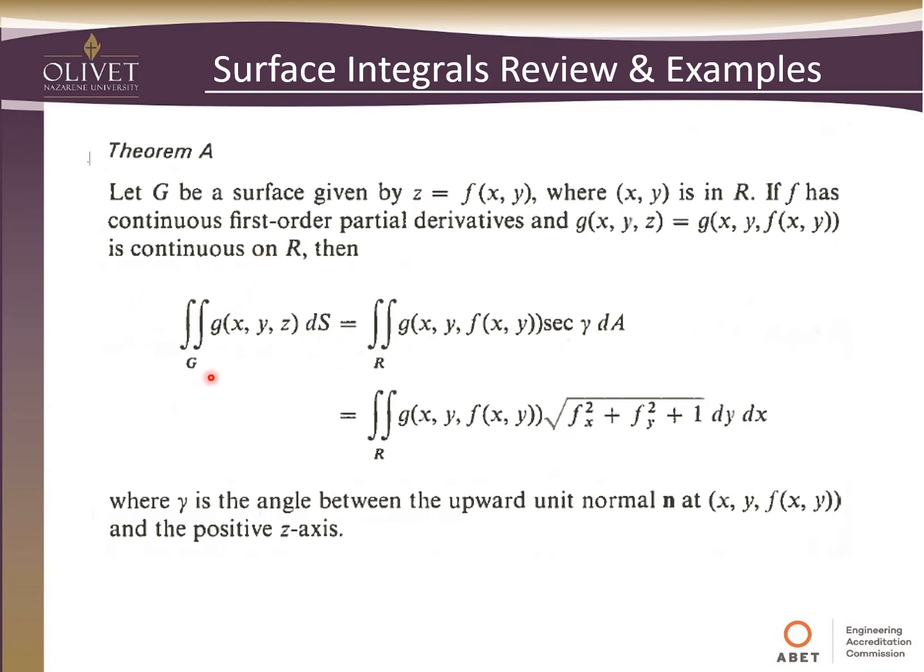Then we can do this little transformation thing here. So if we have Z defined in terms of X and Y, this integral here, we can transform it by transformation of variables into the integral over this continuous R of G(x, y). And instead of the Z term, we have the F of (x, y). And then we do it times the secant of gamma. Well, we can rewrite that. Secant gamma, we can replace with the square root of F_x squared plus F_y squared plus one. So those are the first derivatives.